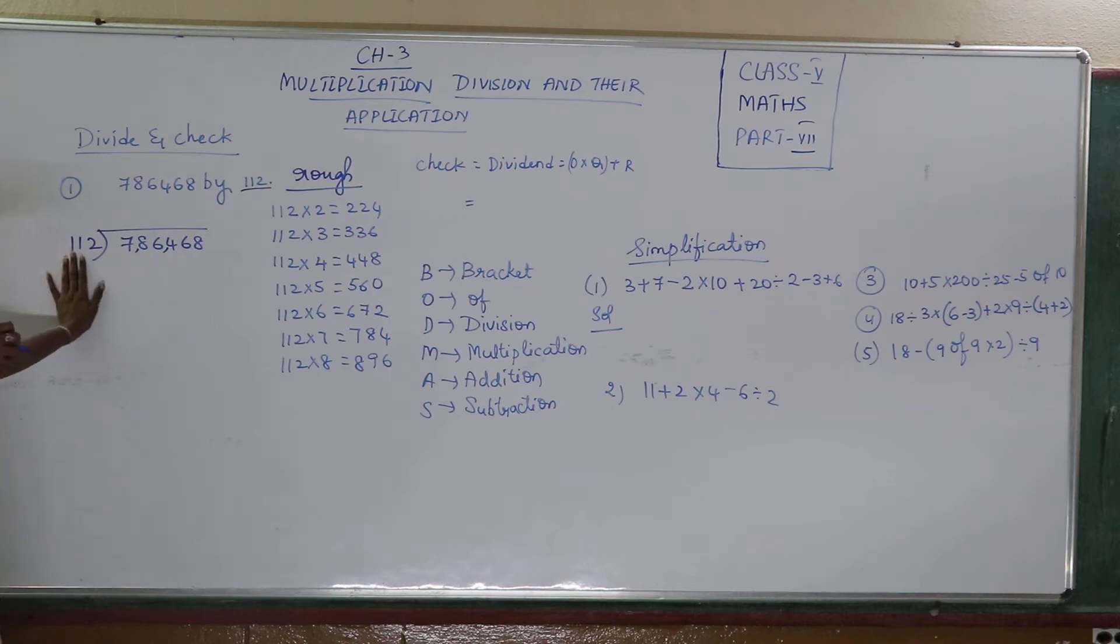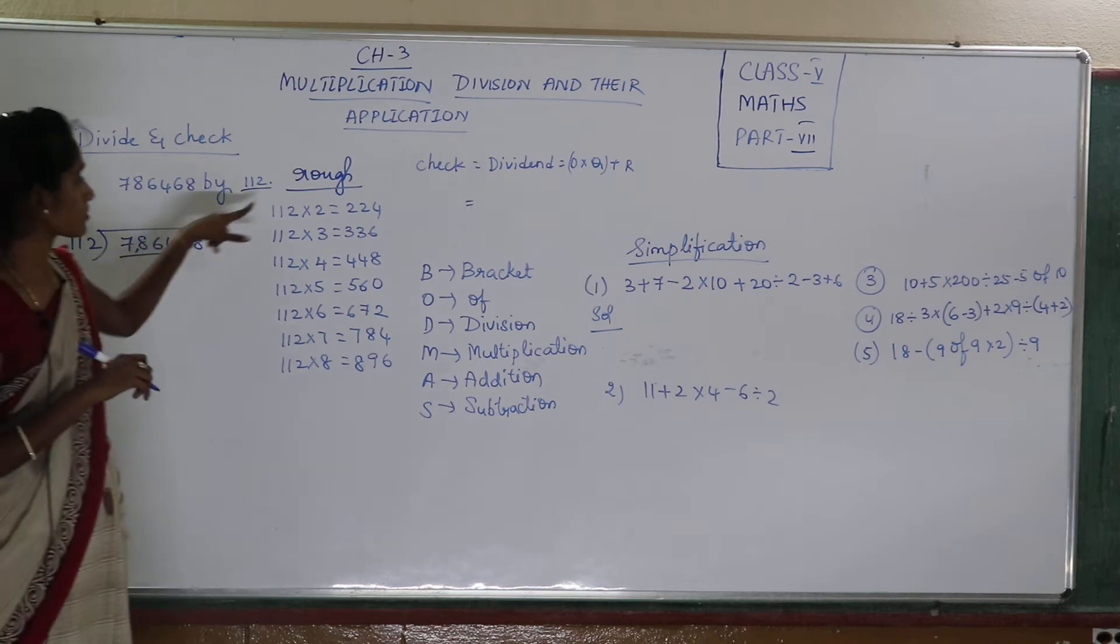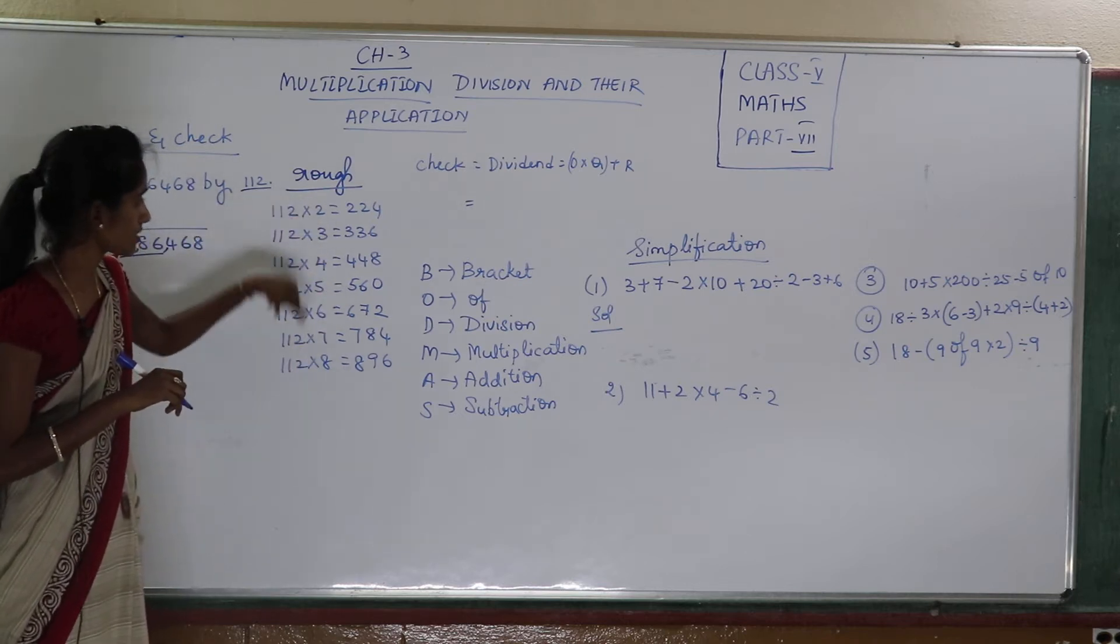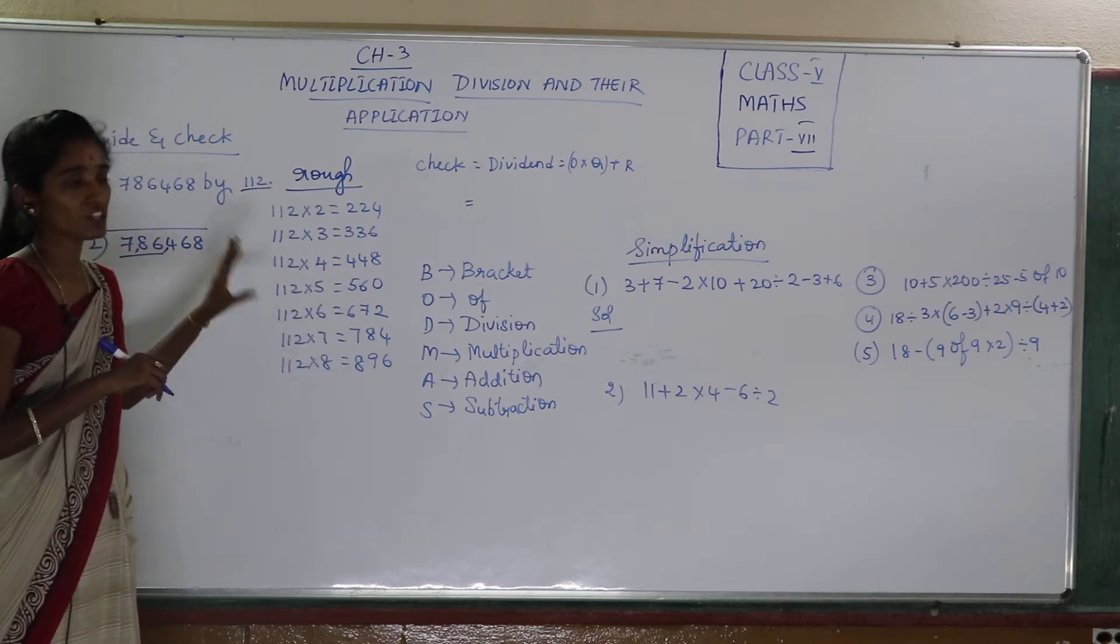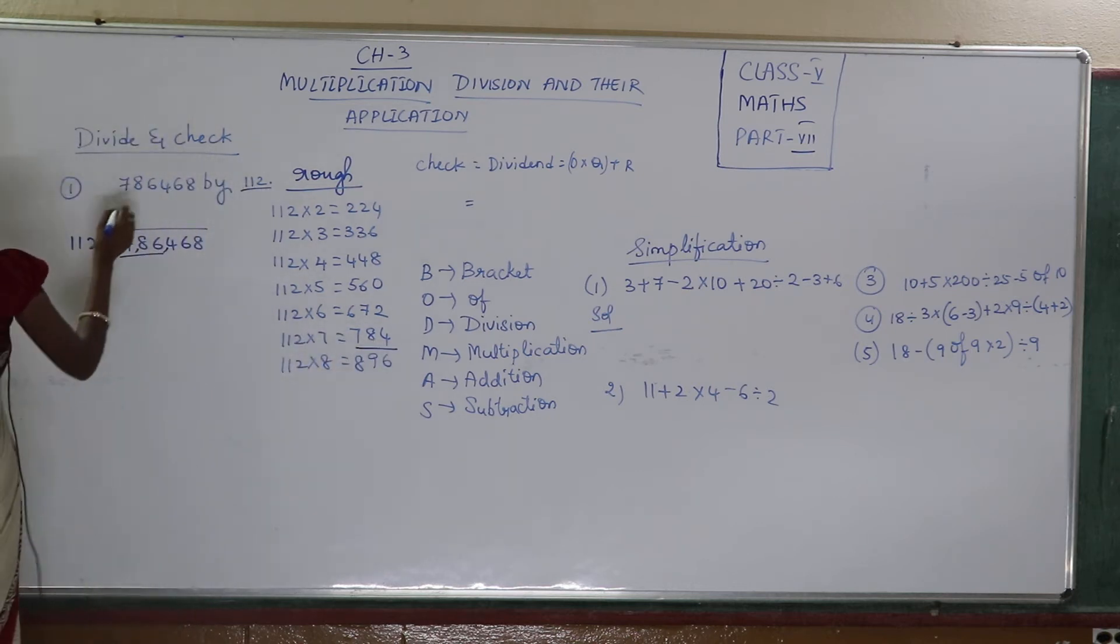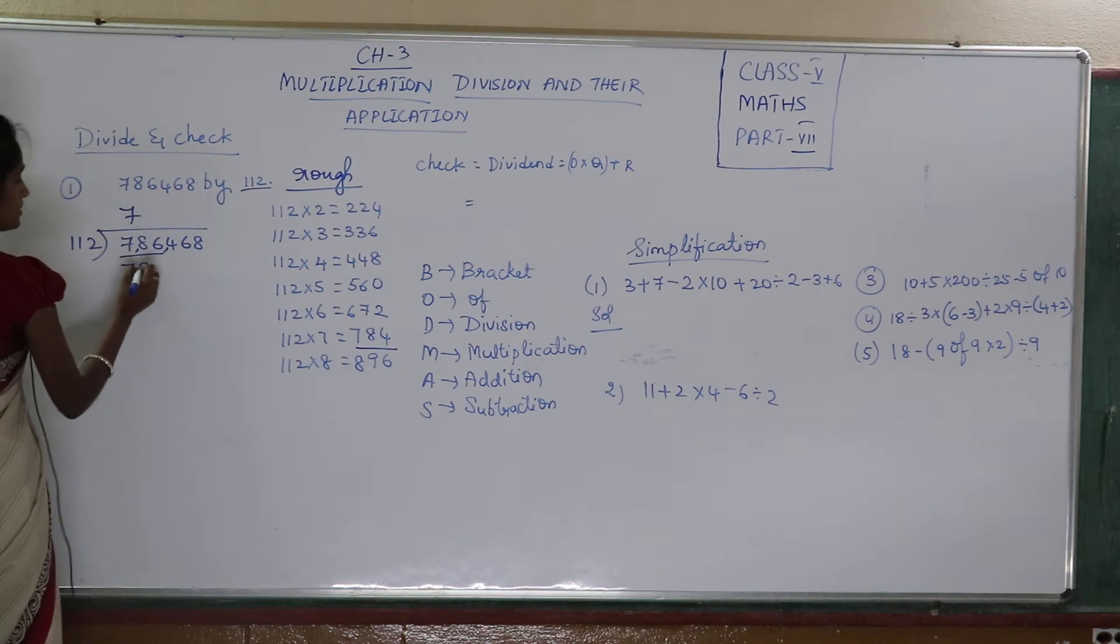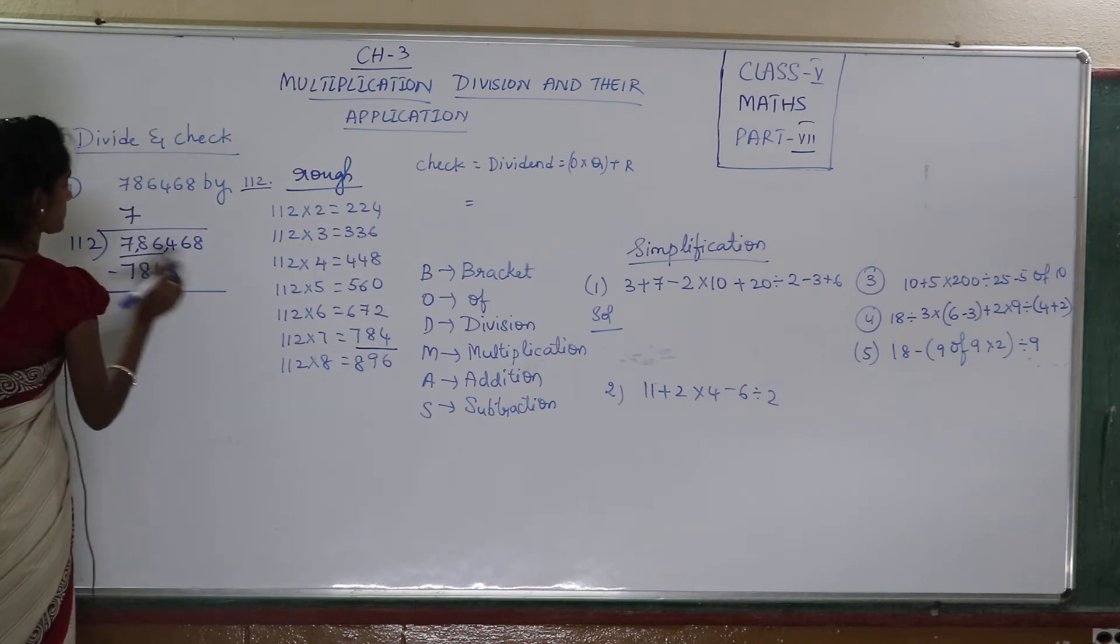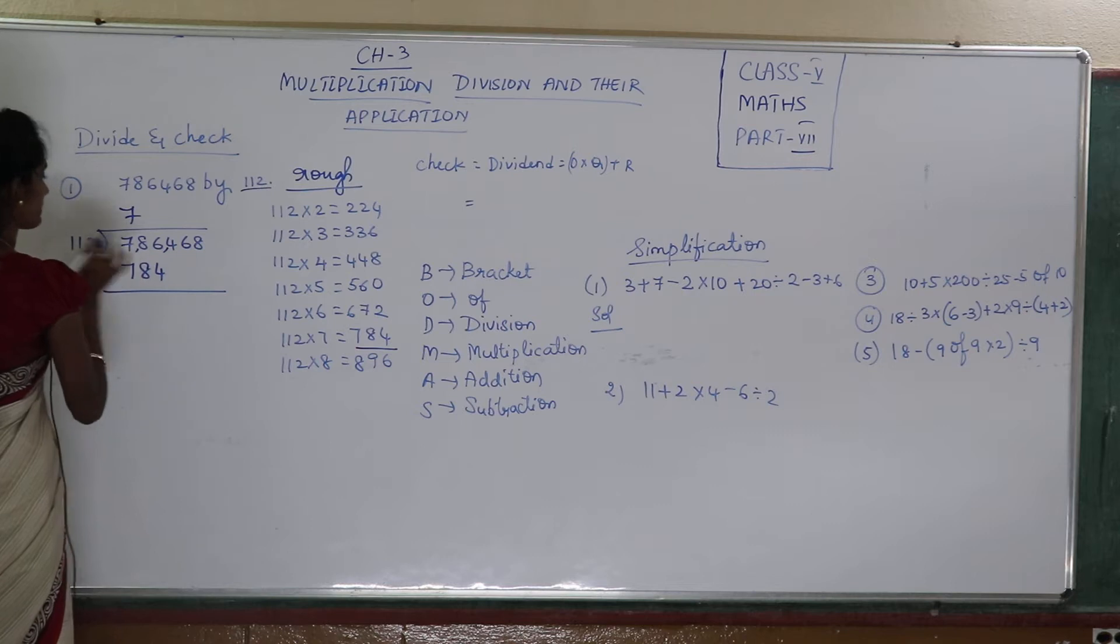Now this is the three digit number, so we can take first the three digits, that is 786. So 786, now in this table check data 786, do you have? No. So what is the closest number to 786, it is 784, how many times? 7 times 784. I will run it off so that it will be clear.